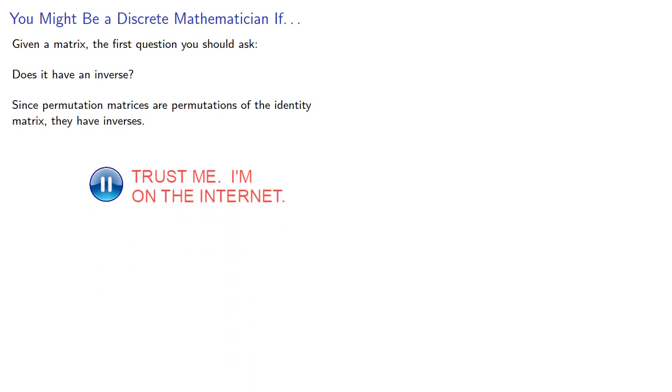Given the matrix, the first question you should ask is, does it have an inverse? Since permutation matrices are permutations of the identity matrix, they have inverses. So how do we find them?